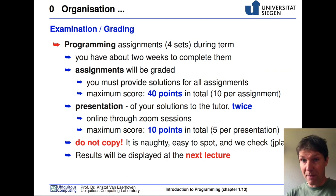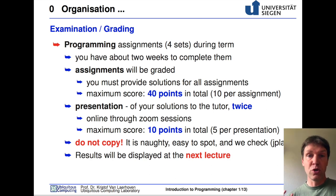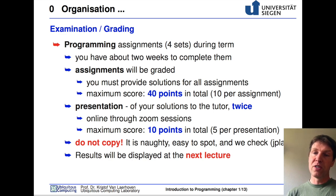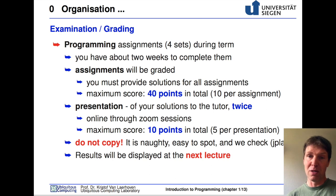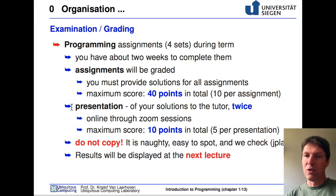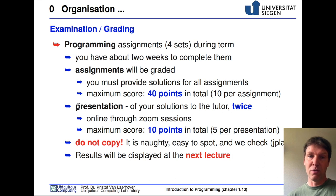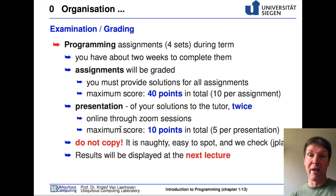At the end of this course we'll have an exam, and this exam is written. Before that, we'll also give you smaller assignments every approximately two weeks. For each assignment you have about two weeks to complete them. These assignments are graded — you get 10 points per assignment. So for four assignments organized through the semester, you will get 40 points. In addition, you will also get the chance to gather points through a presentation, where you present your code to a tutor. This is done online through Zoom sessions, and the maximum score is 10 points in total — five per presentation.